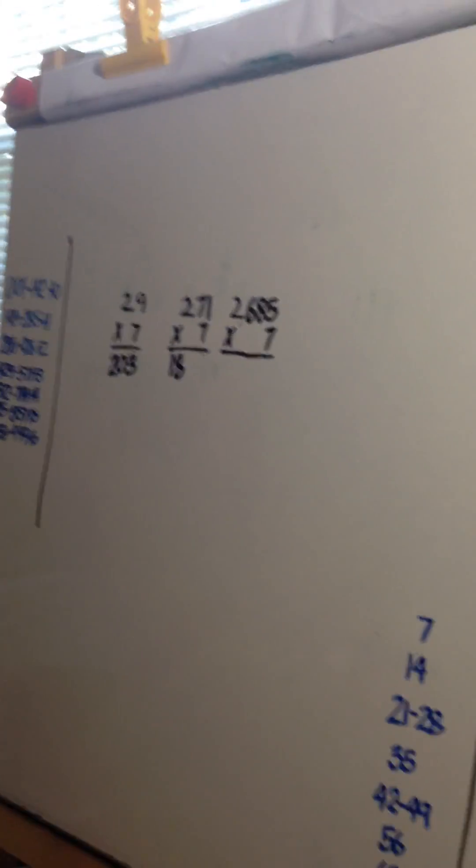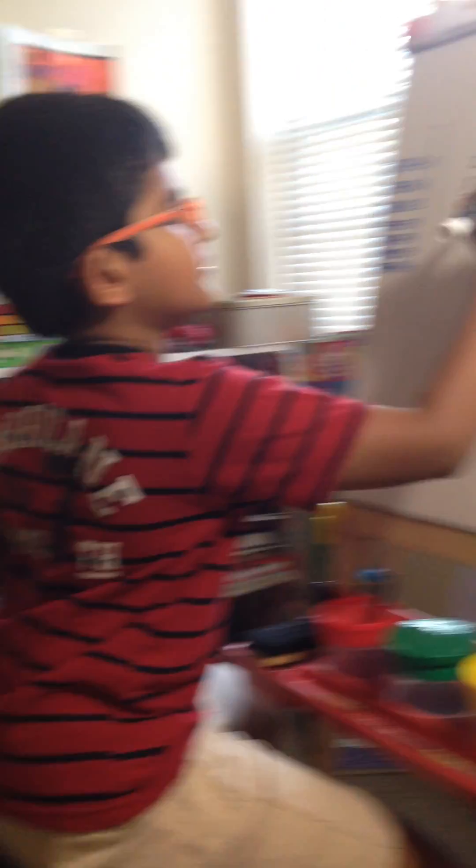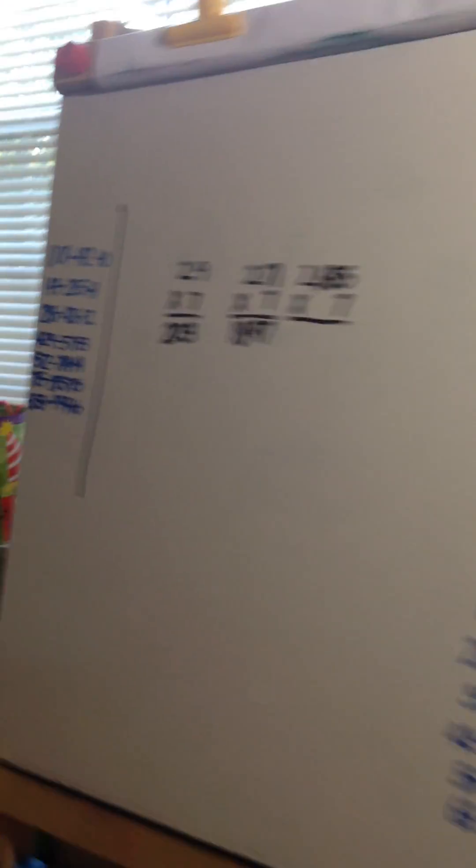Now you know 7 times 7, 49. You take the 4 off and put 9. 1 times 7 is 7, so you just put 7 in the end. There you have your answer: 1897.